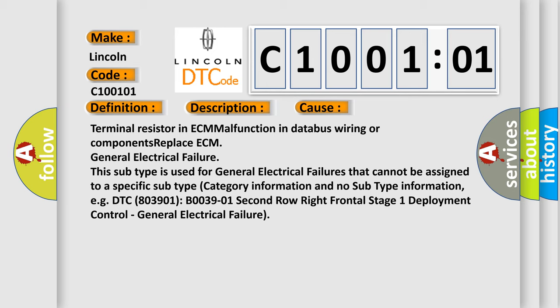This subtype is used for general electrical failures that cannot be assigned to a specific subtype category information and no subtype information. For example, DTC B03901, B0039-01, 2nd row right frontal stage 1 deployment control, general electrical failure.